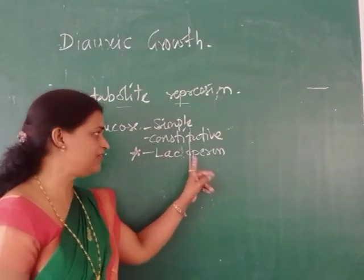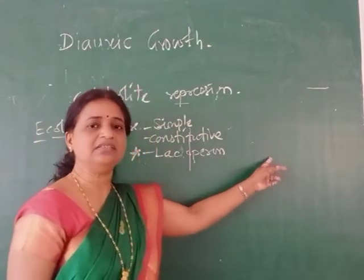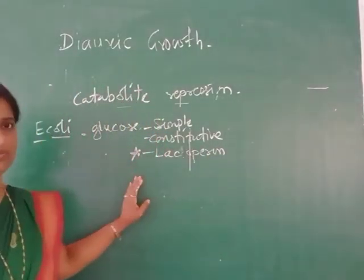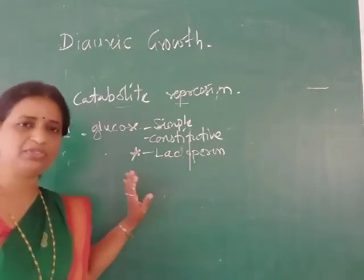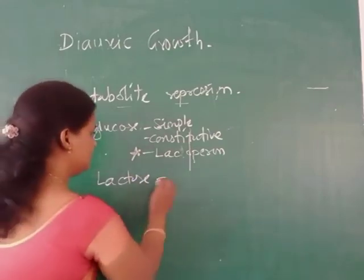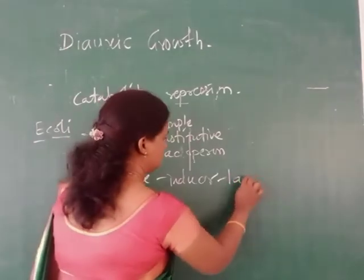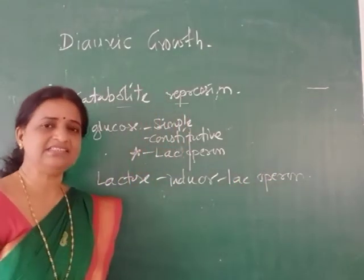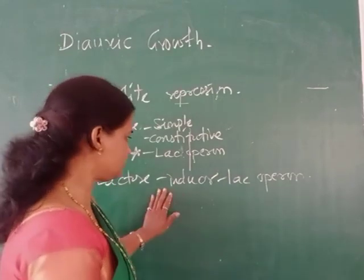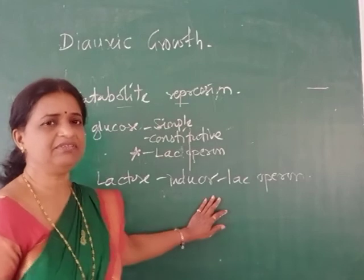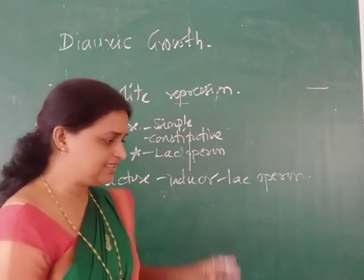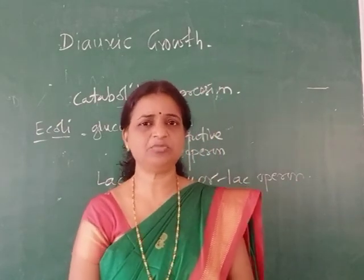When glucose is present, it represses lac operon expression, so there is no synthesis of enzymes required for lactose utilization, and the organism cannot use lactose. But when glucose is totally used up and is absent, lactose acts as an inducer for the lac operon. The lac operon is then expressed and enzymes required for lactose utilization are synthesized — this happens during the second lag period. This entire pattern on a medium with both sugars is called diauxic growth.